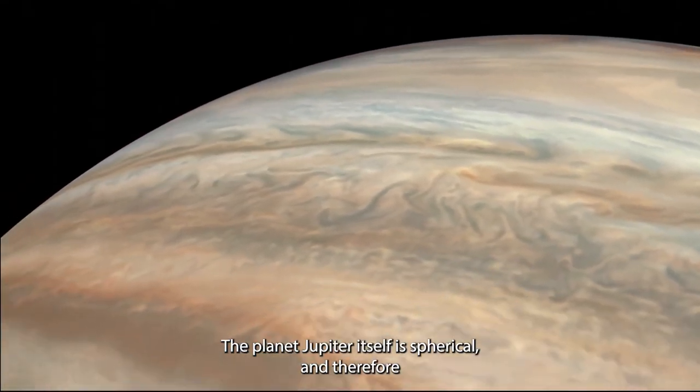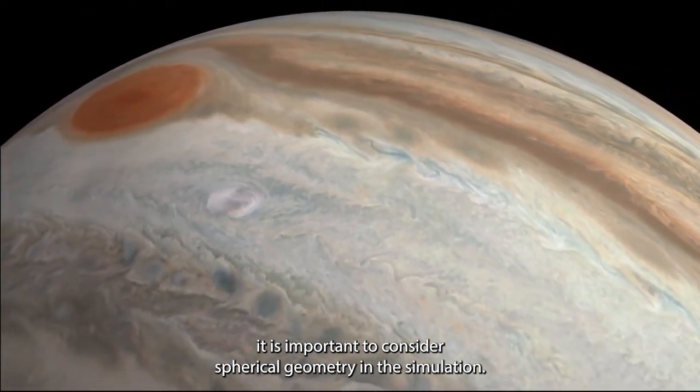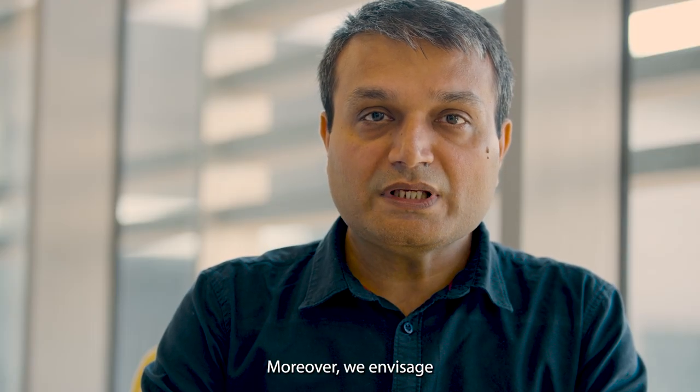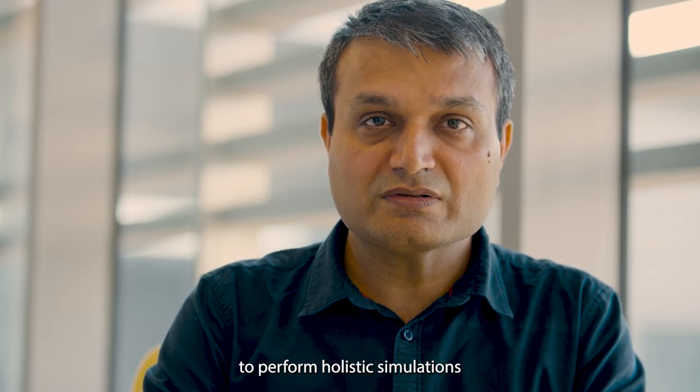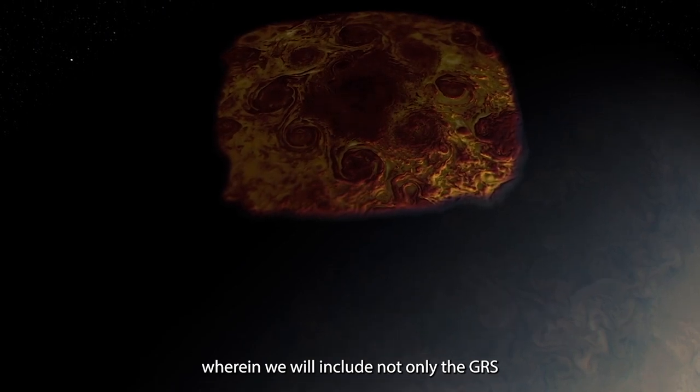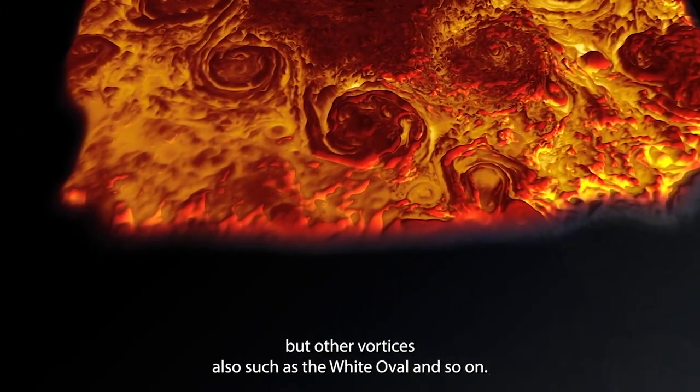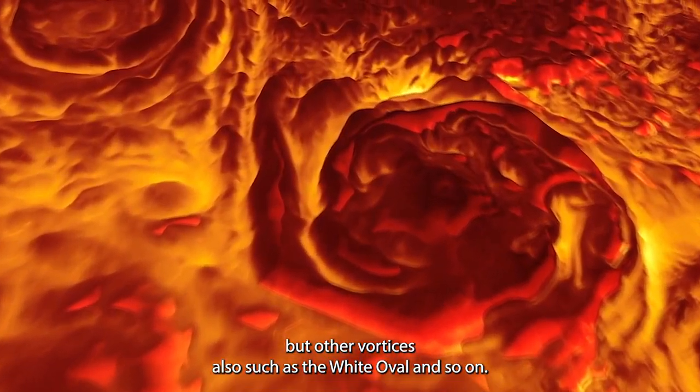The planet Jupiter itself is spherical, and therefore it is important to consider spherical geometry in the simulation. Moreover, we envisage to perform a holistic simulation, wherein we will include not only GRS, but other vertices also such as white oval and so on.